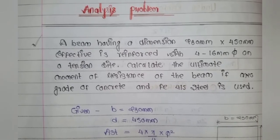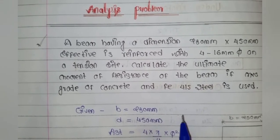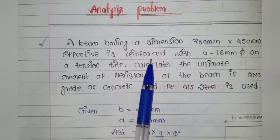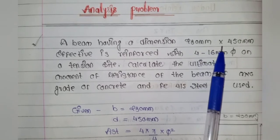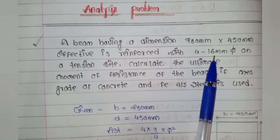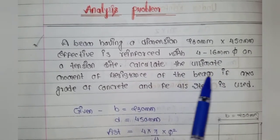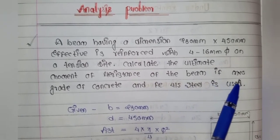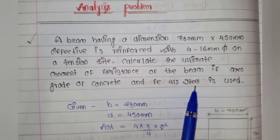Now we will start the analysis problem — Type 1, under reinforced section. A beam having dimensions 230 mm × 450 mm effective is reinforced with four numbers of 16 mm diameter bars on the tension side. Calculate the ultimate moment of resistance of the beam if M20 grade of concrete and Fe415 steel is used.